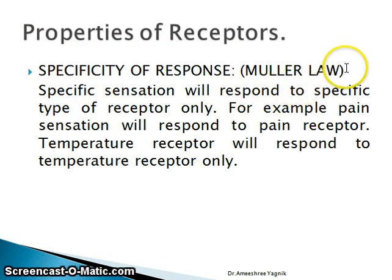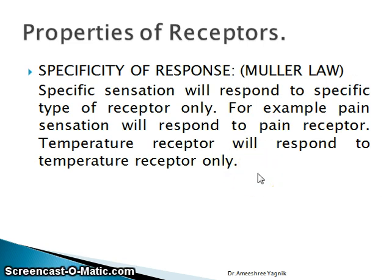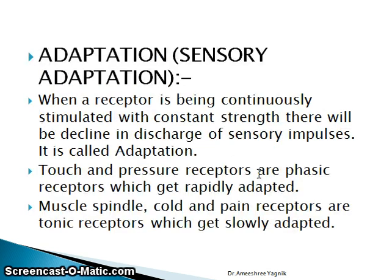Properties of receptors. First: specificity of response, also known as Muller's law, as it was discovered by Muller. A specific sensation will respond to only a specific type of receptor. For example, pain sensation will respond only to pain receptors, and temperature will respond only to temperature receptors.